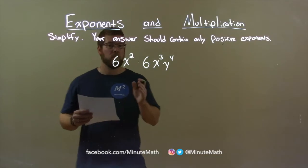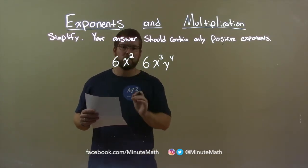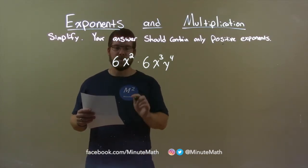Well, first I look at the coefficients. We have 6 and 6. I multiply them together, and 6 times 6 is 36.